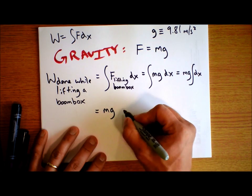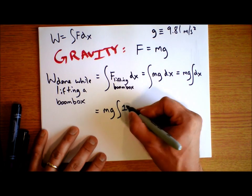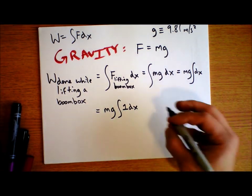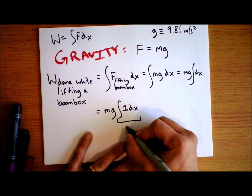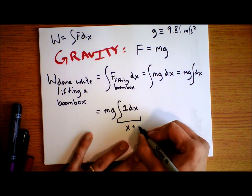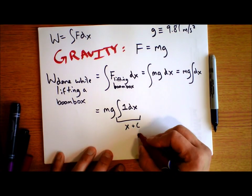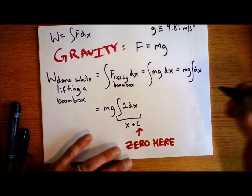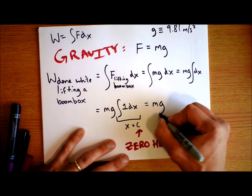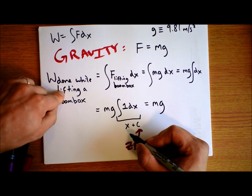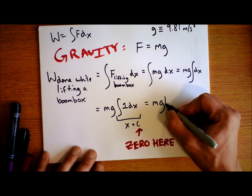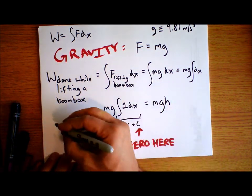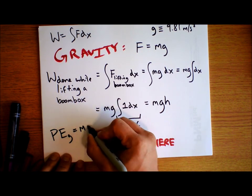The integral of dx is the integral of 1 dx, which is simply x. So we have m times g times x, where x is the distance we've lifted the boombox. If we call that h, the work done by lifting a boombox is mgh. And look — gravitational potential energy equals mgh.